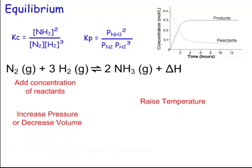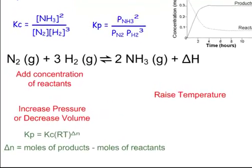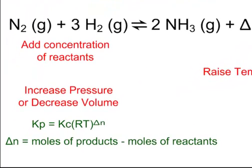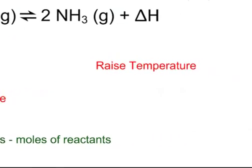If we increase the pressure or decrease the volume, it's going to shift to the right, to the least number of moles. That is Le Chatelier's principle. We can also convert from Kp to Kc with a nice easy equation. Make sure you're using 0.0821 for R. Your delta N is your moles of products minus moles of reactants. In this reaction it would be 2 minus 4, which is negative 4, and that would be the power of R times T.